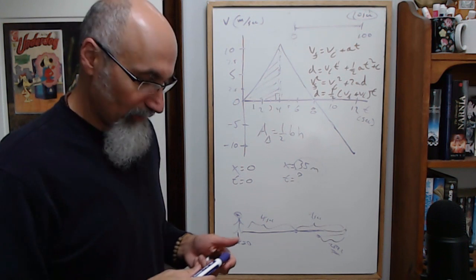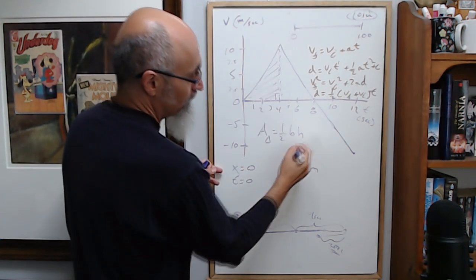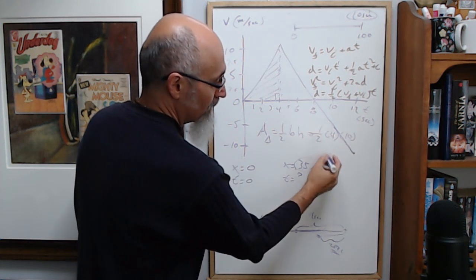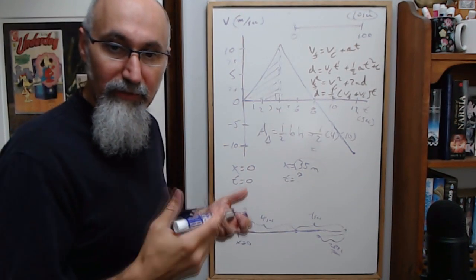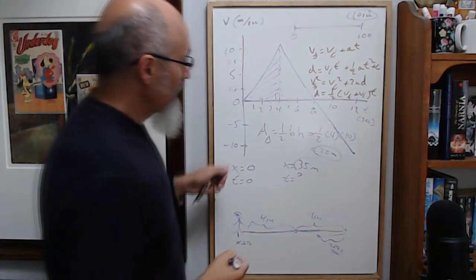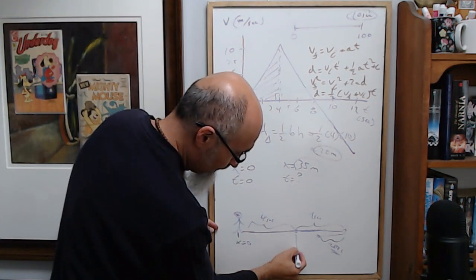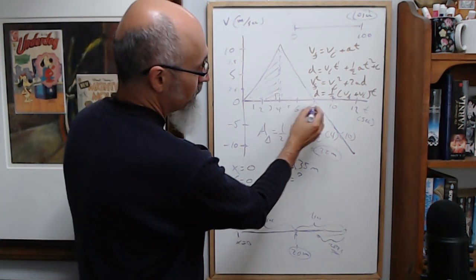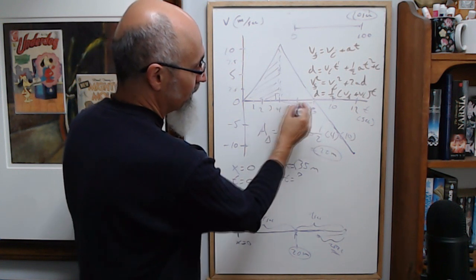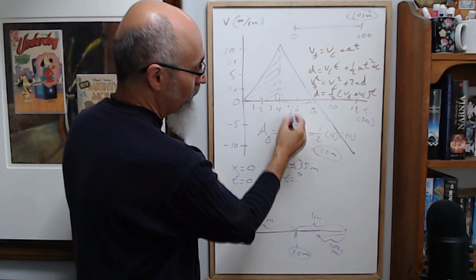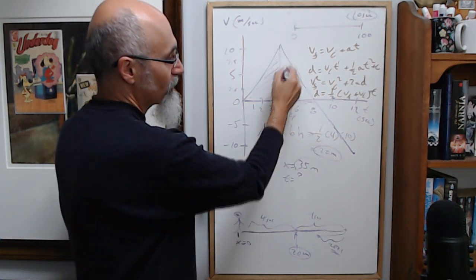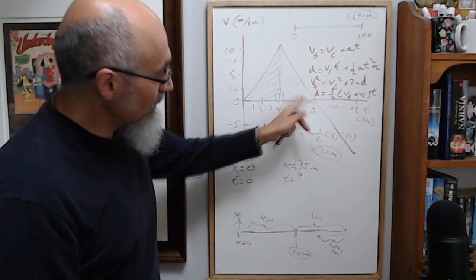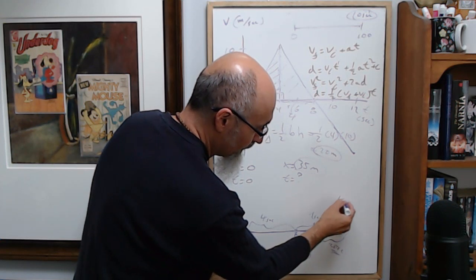Let's find the area under the graph for the first 4 seconds. It's a triangle: one-half times base 4 times height 10 equals 20 meters. In the first 4 seconds this runner has traveled 20 meters. From 4 to 8 seconds is another triangle with the same dimensions — another 20 meters. So at 8 seconds the runner has traveled a total of 40 meters.